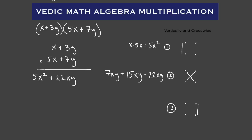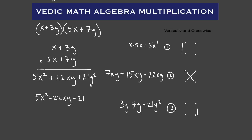Step number three, the last step — we're going to go straight down the right-hand side: three Y times seven Y gives us 21 Y squared. So there's our third term: 21 Y squared. Our answer is five X squared plus 22 X Y plus 21 Y squared.